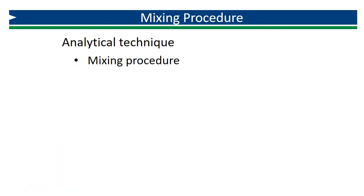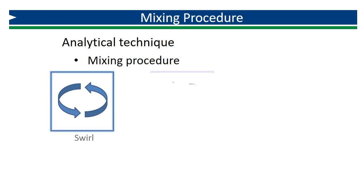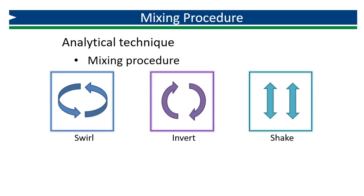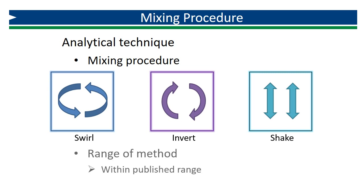It is critical to follow each method according to the manufacturer's protocol. One area often overlooked is mixing procedure. One common manufacturer has three separate mixing procedures for various ranges. Proper mixing may seem like a minor step, but it ensures the complete reaction of all chlorine with DPD as well as avoids introducing interference, either from unreacted DPD reagent or air bubbles from overly vigorous shaking. Also keep in mind the range of the method — only measurements within the analytical range published by the manufacturer should be considered valid.